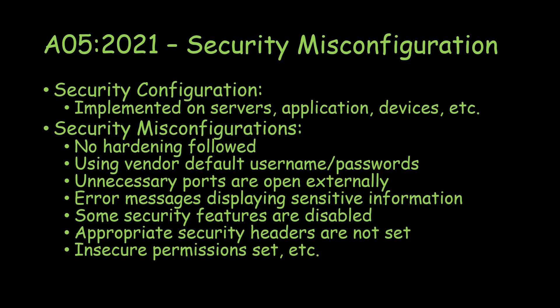The final example of security misconfiguration covered here is insecure permissions. On a server where multiple teams are working, there may be configuration files containing hard-coded passwords. If those files are readable or writable by everyone on the server, anyone can view or tamper with them. These are the most common examples of security misconfiguration, though the full list goes on further.